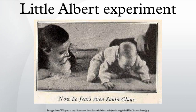Methodology: the aim of Watson and Rayner was to condition phobias into an emotionally stable child. They chose Albert for this study from a hospital. As a preliminary to the experiment, Little Albert was given a battery of baseline emotional tests. The infant was exposed, briefly and for the first time, to a white rabbit, a rat, a dog, a monkey, and masks.